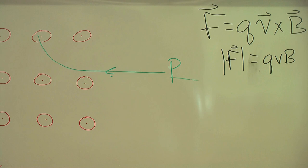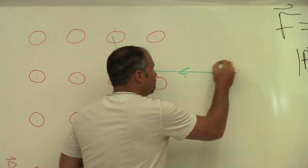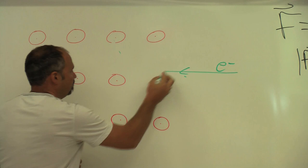Now, if instead of a proton, this was an electron, which is negatively charged, then it's just the opposite. It'll twist downward.